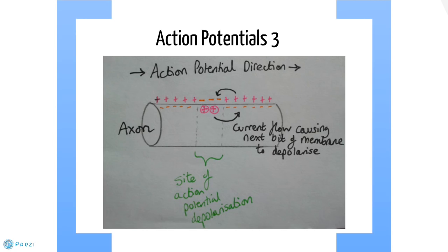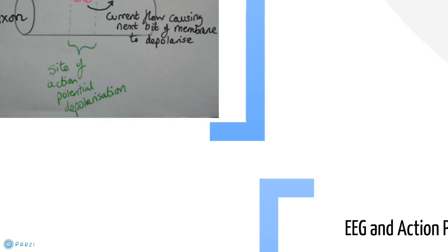Due to the refractory periods, this means that the action potential can only flow in one direction. In myelinated nerves there is saltatory conduction, where the axon is only depolarised at the nodes of Ranvier, thus allowing faster conduction.